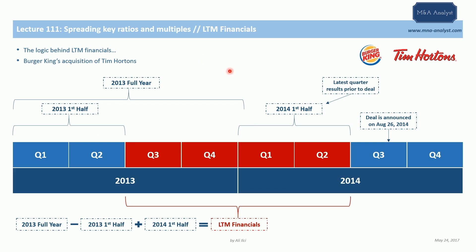The deal, as you can see here, is announced on the 26th of August 2014, which is somewhere close to the end of the third quarter. So the last quarter results prior to the announcement — the closest — is the end of the second quarter 2014, which is the first half of 2014, these two quarters.